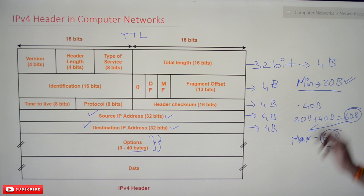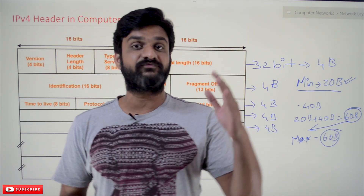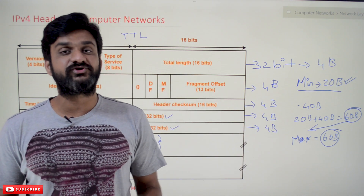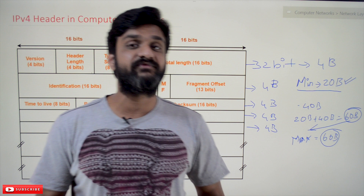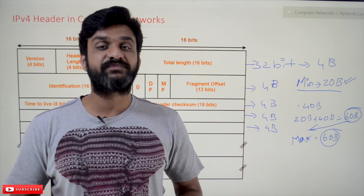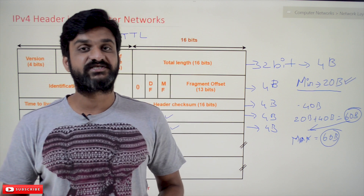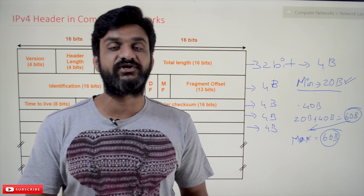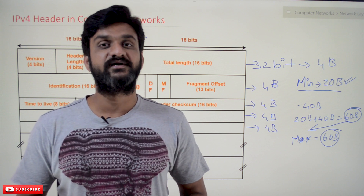So the range of bytes that can be accommodated in the IPv4 header varies from 20 bytes to 60 bytes. This is just an introduction to the IPv4 header — a detailed explanation of each field will be covered in our later classes. Hope you got clarity on this concept. Thanks for watching. Please subscribe to our channel, press the bell icon for latest updates, post doubts in the comment section, give us a like, and share this video with your friends.